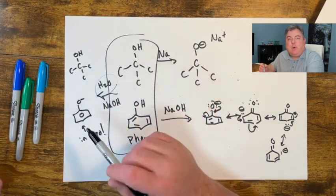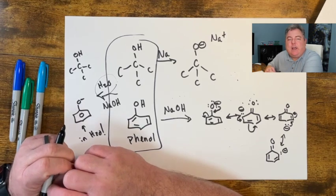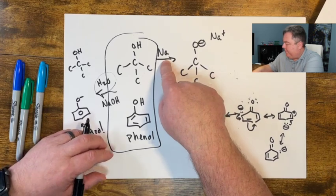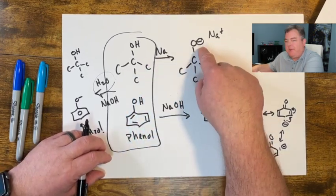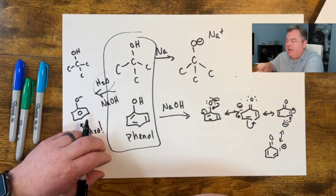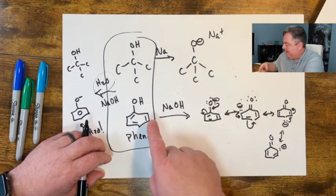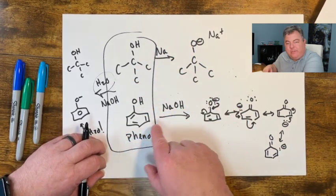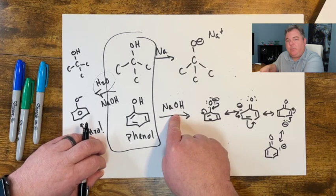All right, I hope that's helpful that you've learned how you take up alcohols. You can remove the proton with sodium if it's a regular alcohol to make an O minus alkoxide, which can then go attack something, or phenols. We've learned are also pretty acidic and they can be deprotonated with sodium hydroxide.